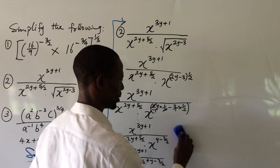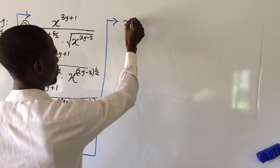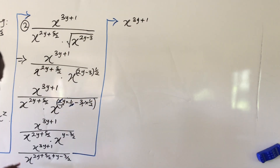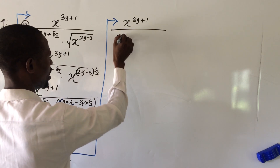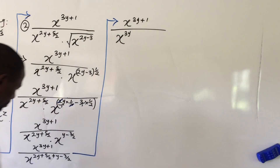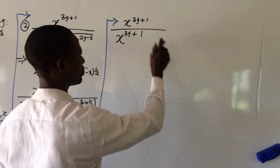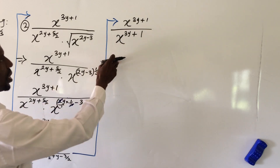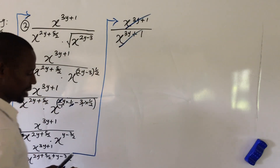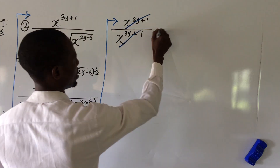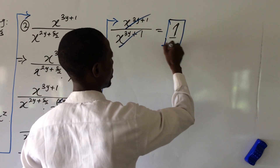Proceeding from here: we have x to the power of 3y plus 1 in the numerator. In the denominator, 2y plus y gives 3y, and 5 over 2 minus 3 over 2 gives 1, so the denominator is x to the power of 3y plus 1. The numerator cancels with the denominator entirely, so the answer is 1.